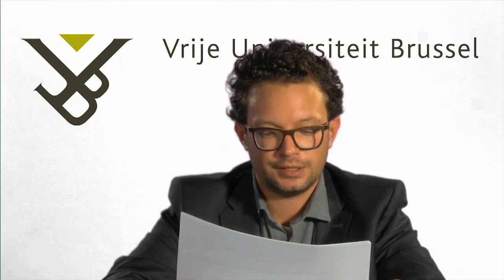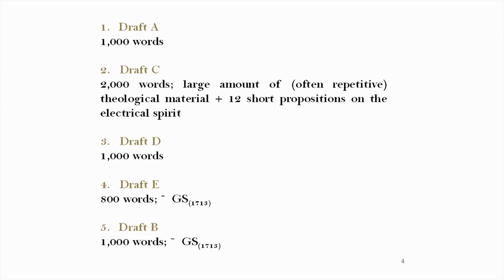Let me provide you with some details regarding these five holograph drafts. Drafts A, D, E, and B are equally long. Drafts E and B correspond very closely to the published version in the second edition of the Principia. Draft C is twice as long as the other drafts — it has 2,000 words and contains a large amount of theological material and 12 short propositions on the electrical spirit.